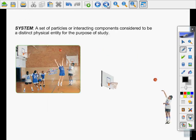System. A system is a set of particles or interacting components considered to be a distinct physical entity for the purpose of study.